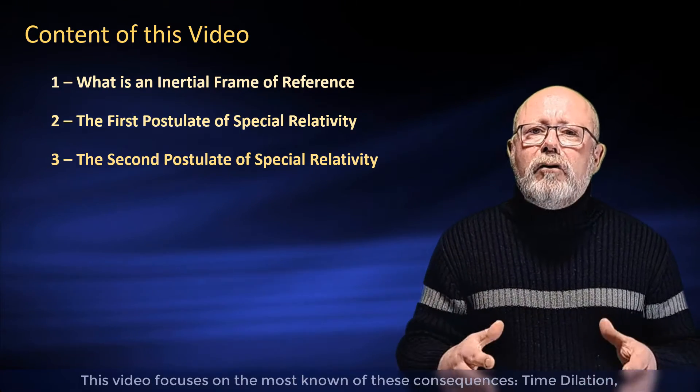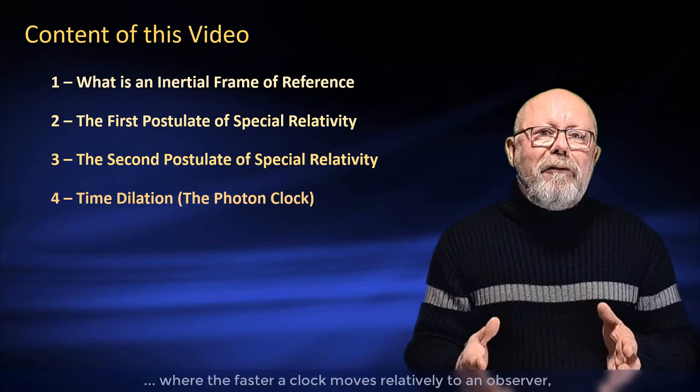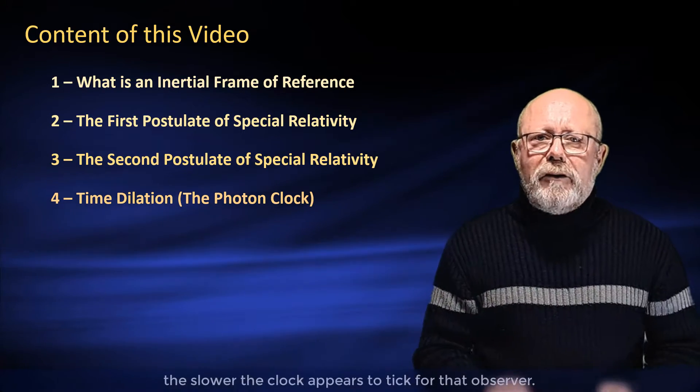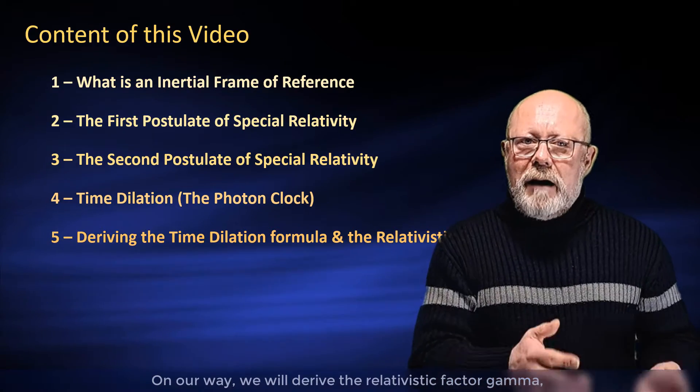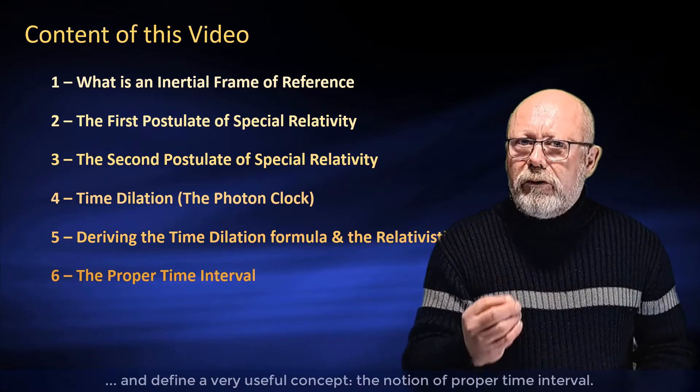These two postulates have truly bizarre consequences on our conception of space and time. This video focuses on the most known of these consequences: time dilation, where the faster a clock moves relatively to an observer, the slower the clock appears to tick for that observer. On our way, we will derive the relativistic factor gamma and define a very useful concept, the notion of proper time interval.